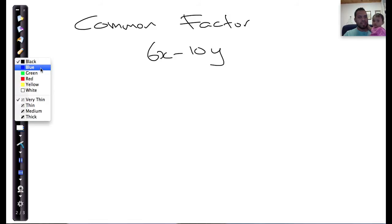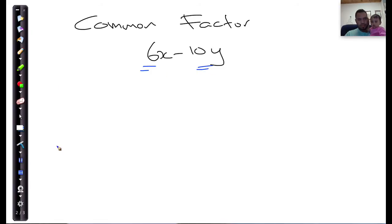Let's look at the question of factorizing the following example: 6x minus 10y. Now the first step is we have to do something in the same way that we did previously. So we look at the factors of 6x. What can go into 6 and what can go into x?